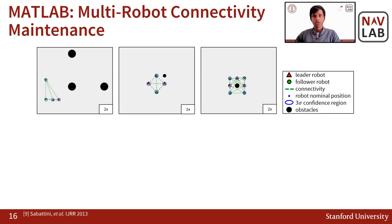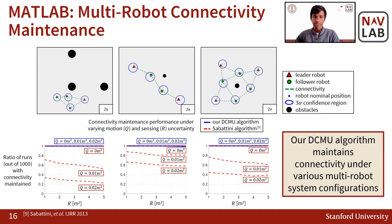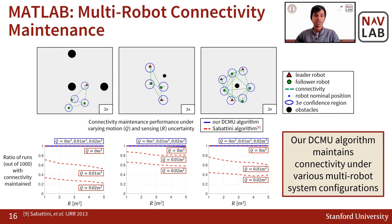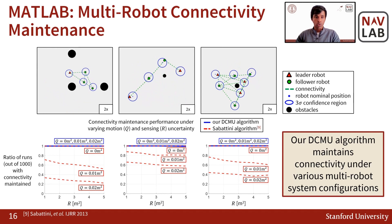Next, we look at how our algorithm performs for different multi-robot setups and compare it to previous work by Savatini et al. Again, we observe similar results. As motion and sensing uncertainties increase, our algorithm maintains connectivity for all the runs. However, the previous algorithm by Savatini et al. performs similarly when there is no uncertainty, but as uncertainty increases, performance goes down in terms of successful connectivity-maintained runs.